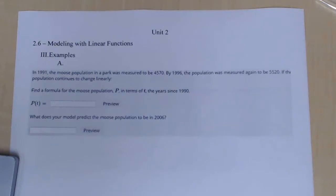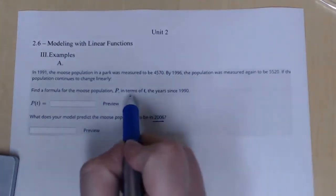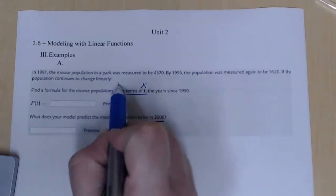In 1991, the moose population in a park was measured to be 4,570. Well, that's a lot of moose. By 1996, the population was measured again to be 5520. If the population continues to change linearly, find a formula for the moose population, p in terms of t, the years since 1990. And then what does your model predict the moose population to be in 2006? So here, I'm going to be looking for an equation, and then I'm going to plug 2006 into my equation. So first thing I notice is it says p in terms of t's. This is my x's. This is my y's.